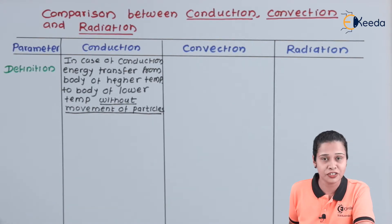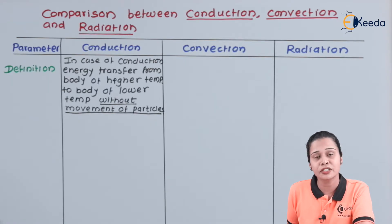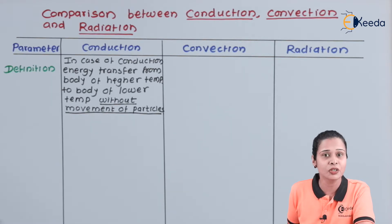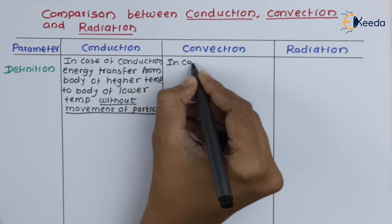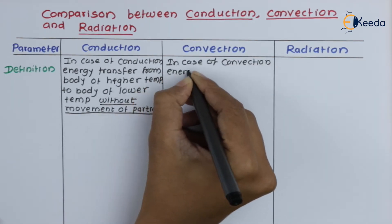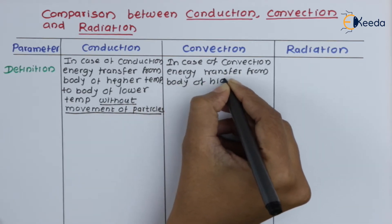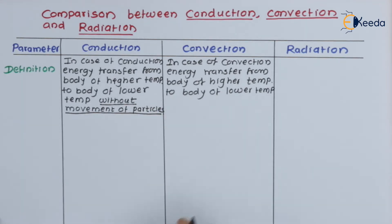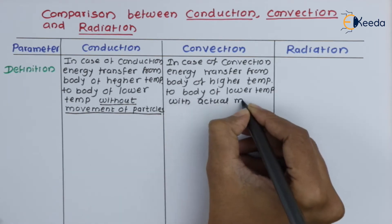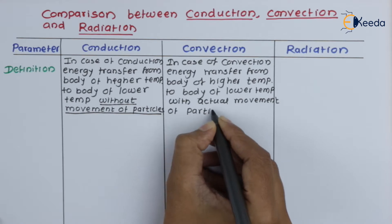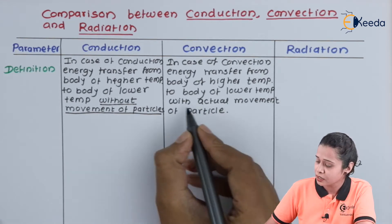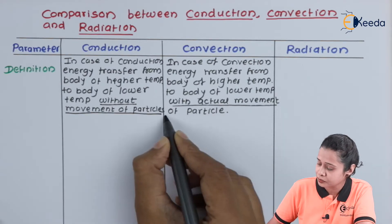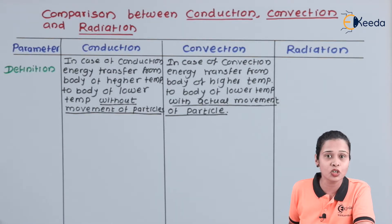Now we will see what is convection. Convection is a process in which there is actual movement of particle when a body transfers heat from higher temperature to lower temperature. The important word here is: with actual movement of the particle. So in case of convection, there is an actual movement of particle from higher to lower temperature.